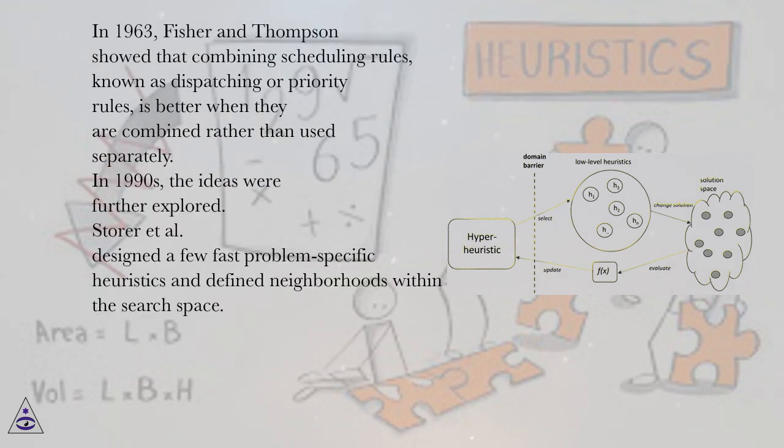In 1963, Fisher and Thompson showed that combining scheduling rules, known as dispatching or priority rules, is better when they are combined rather than used separately. In the 1990s, the ideas were further explored.